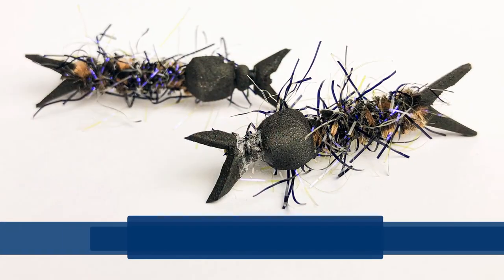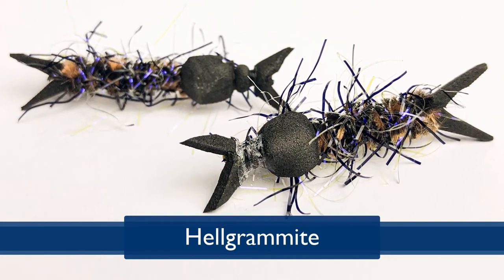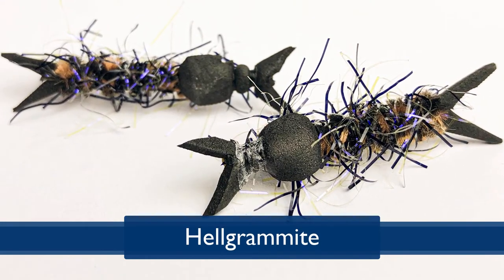Today I would like to introduce you to tying the Helgramite. The Helgramite is the nymphal stage of the Dobson fly and it's found throughout the rivers and streams in Pennsylvania. It has great notoriety as both a trout fly and as a bass fly.